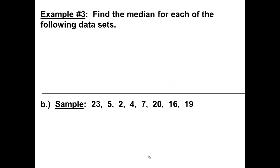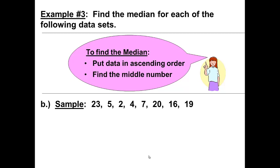Let's look at sample B. Part B gives us the sample data of 23, 5, 2, 4, 7, 20, 16, and 19. To find the median, put the data in ascending order and then find the middle number. Now we have the data in ascending order from smallest to largest: 2, 4, 5, 7, 16, 19, 20, and then 23.